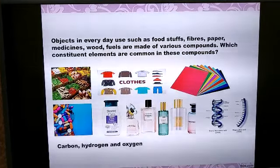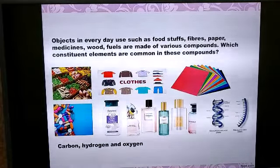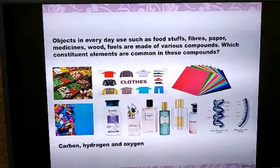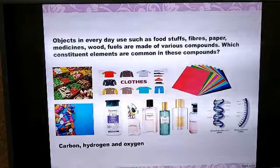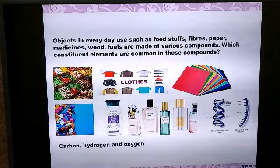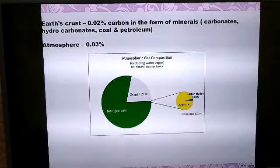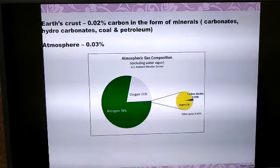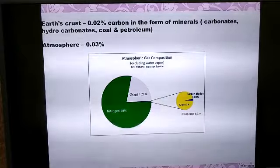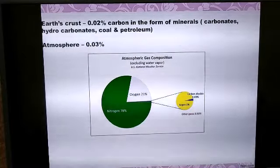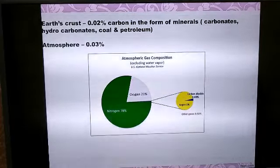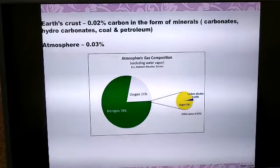We use many things in our day-to-day life such as foodstuffs, clothes, paper, medicines, wood, fuel, shampoo, perfumes, etc. All these compounds contain carbon as a very important constituent element, along with hydrogen and oxygen. The percentage of carbon in the earth's crust is very meager. Earth's crust contains only 0.02% of carbon in the form of minerals like carbonates, hydrogen carbonates, coal and petroleum. The atmosphere contains 0.03% of carbon in the form of carbon dioxide. In spite of this small amount, the importance of carbon is immense.